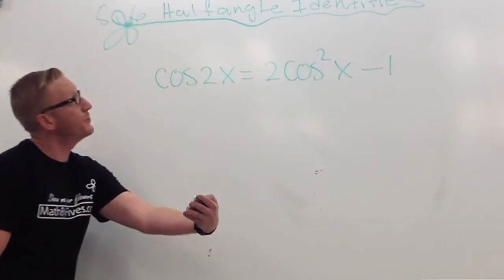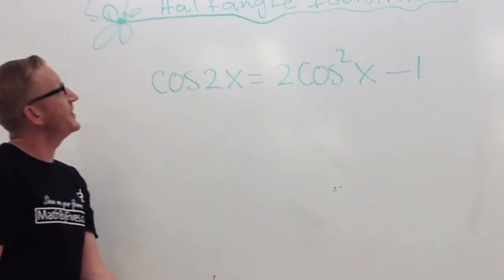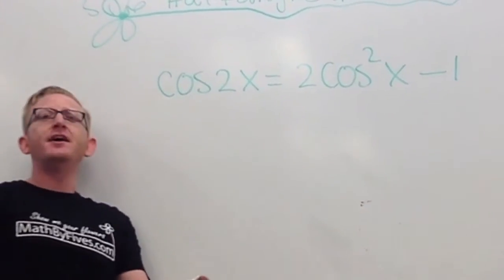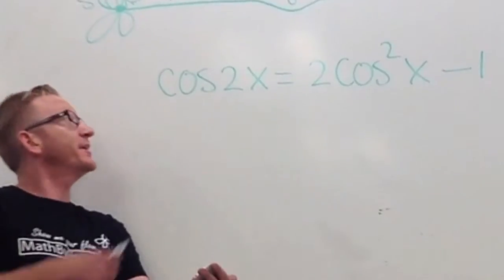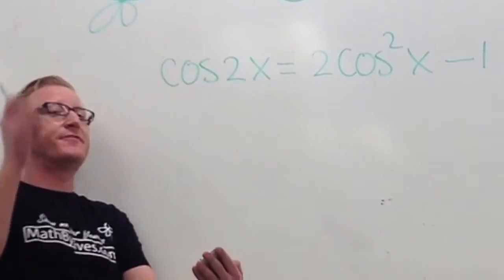What do we want to do? We want to prove that half angle identity. And what are we going to need to use? Double angle. We're going to need to use the double angle for cosine.